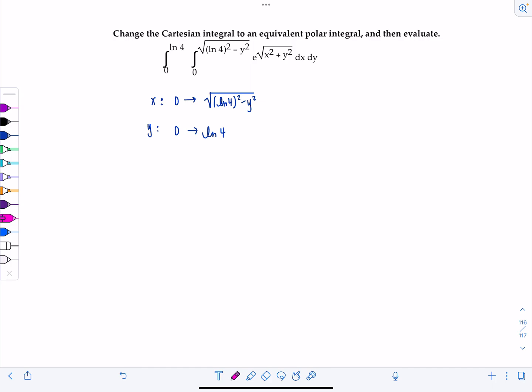Now you should recognize that this represents the equation of a semicircle. This is a limit for x, so x equals rad ln of 4 squared minus y squared. If I square both sides, that's x squared equals ln of 4 squared minus y squared, so x squared plus y squared equals ln of 4 squared. Since this was solved for x in terms of y and we didn't have both the plus and minus in front of the radical, this is just the right half of that circle centered at 0, 0, and the radius is natural log of 4.